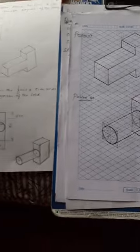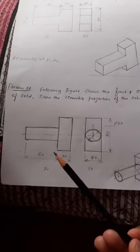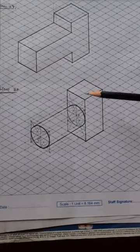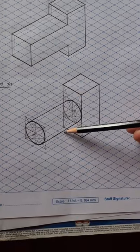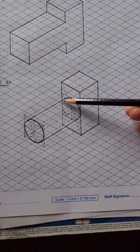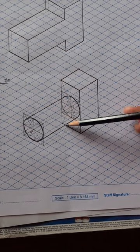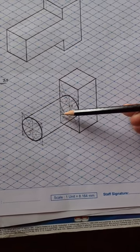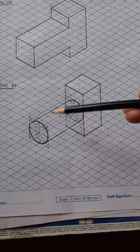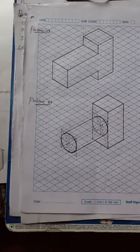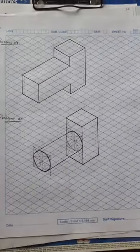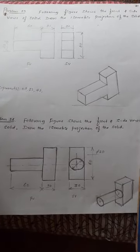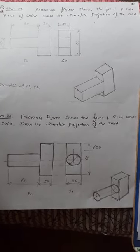This is how we construct problem number 28. Now show only the visible lines. Here the cylinder and the prism coincide — don't show this line, or show it as a dashed line or continuous thin line. Remaining things are continuous thick lines. Try to solve these two problems. If you have any doubt, contact me, and thank you for watching this video.